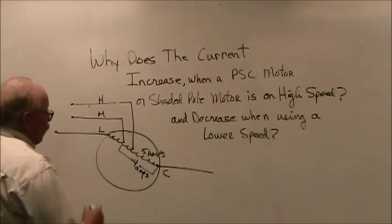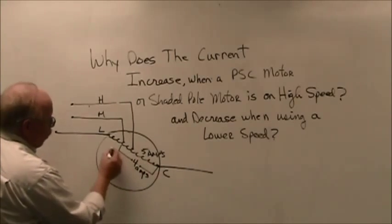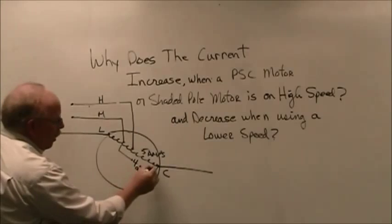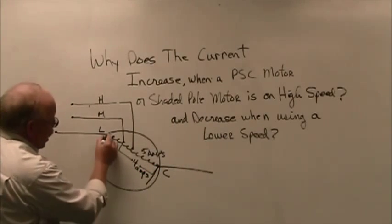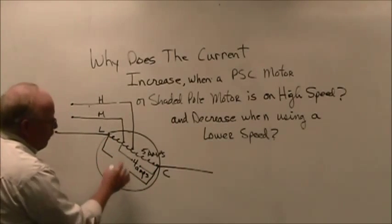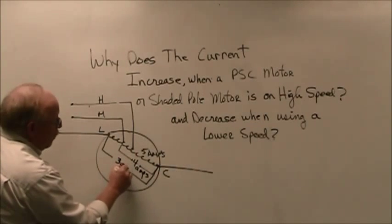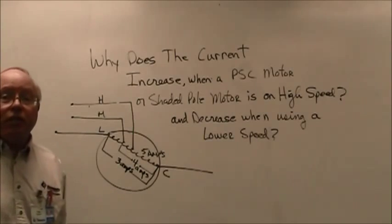Now, using that same principle, if I go from this point to this point, disconnect off of M and connect to L, now if I go from C to L, now I've got even more resistance. And maybe now it only runs 3 amps because with the added resistance, it is now going to have a lower amp draw according to Ohm's law.